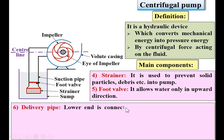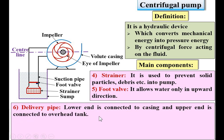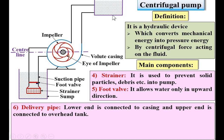Next: delivery pipe. The lower end is connected to the casing and the upper end is connected to the overhead tank. I am going to draw the delivery pipe over here — lower end connected to the casing, upper end connected to the overhead tank. This is the overhead tank filled with water, and our objective is to lift the water from the sump to this overhead tank. Sometimes this tank is known as the delivery tank also. This is the delivery pipe and this is the delivery tank or overhead tank.